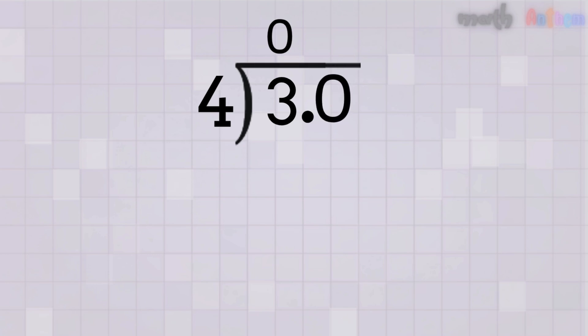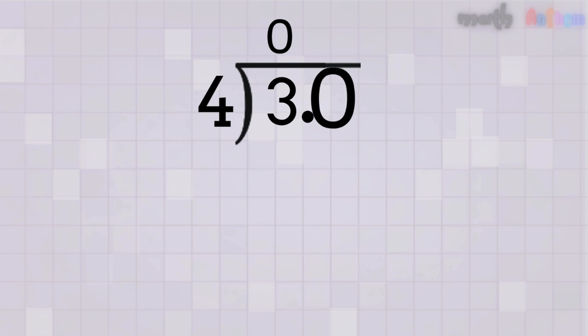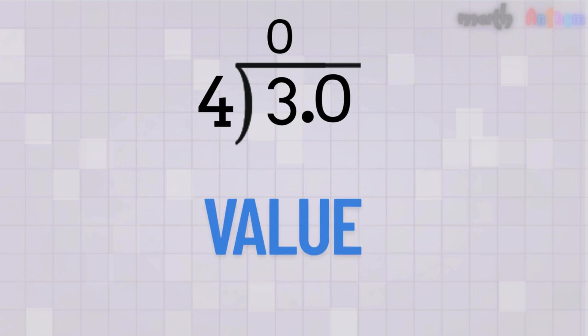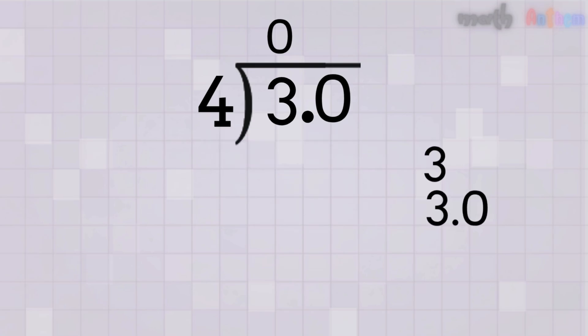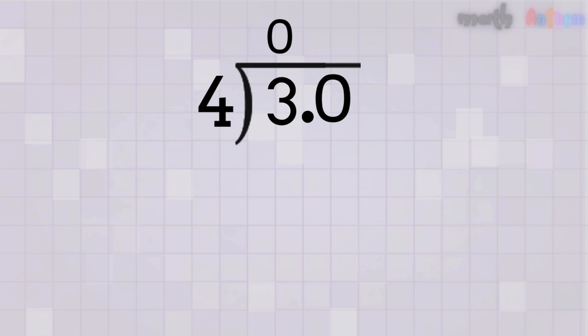Don't forget to put a zero right after it. But wait, why are we allowed to do that? Great question — adding a decimal and a zero does not change the value of the number. 3 is the same as 3.0, or even 3.00, or 3.0000. They all mean the same thing. We just add the point zero so we can keep dividing. We also place a decimal point above the division line in the quotient.